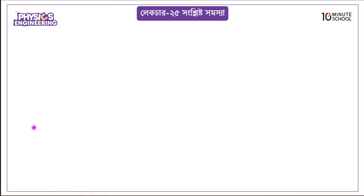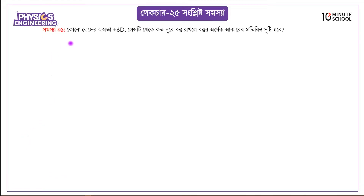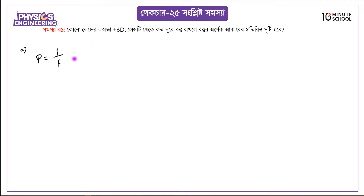So what does this mean? One of our problems involves 1 over F. We know that 1 over F is equal to 1 over u plus 1 over v.